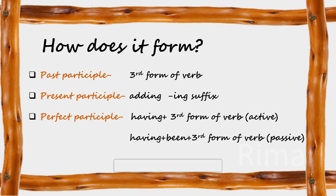First, past participle. It is the third form of the verb. It is generally formed by adding suffixes like -d, -ed, -t, -en, or -n. For example: written, received, learned, studied, eaten, etc. All these are third forms of verbs and they are past participle.